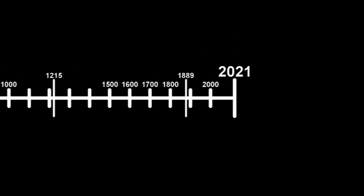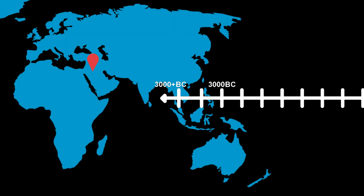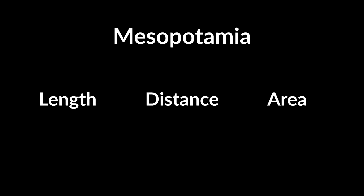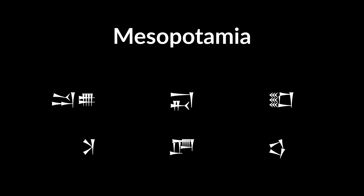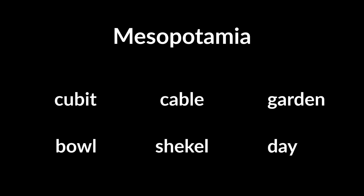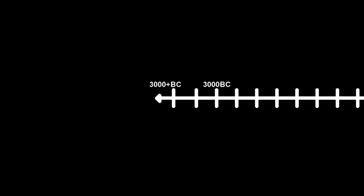Let's go back to the very early beginnings where units of measurement were used. The first time we know that measurement units were used was as early as 4000 to 3000 BC in Mesopotamia, Egypt, and other locations across the globe. In Mesopotamia, for example, they had measurements for length, distance, area, volume, mass, and time — we know what they were called and how they were written, but we can only guess how they relate to our modern units today. So let's jump forward to 1215.